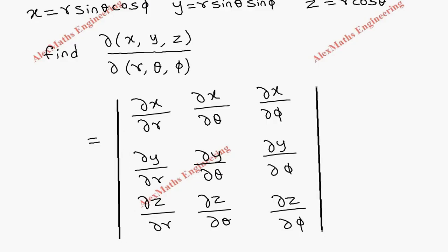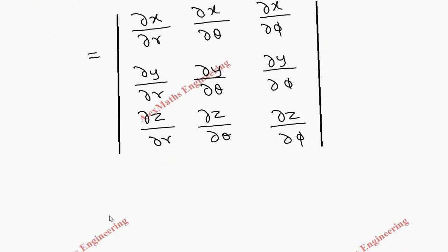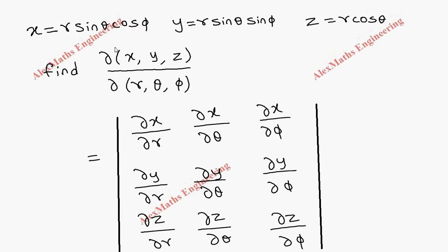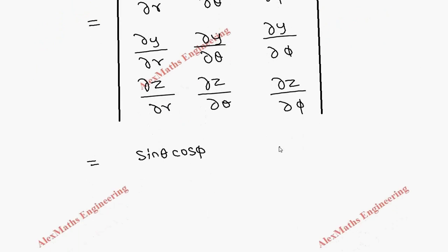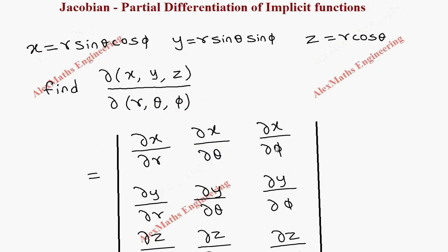Differentiating x with respect to r: sin θ and cos φ are constant, so the first element is sin θ cos φ. With respect to θ: sin θ becomes cos θ, giving r cos θ cos φ. With respect to φ: sin φ becomes −sin φ, giving −r sin θ sin φ.